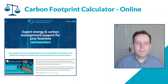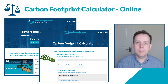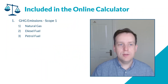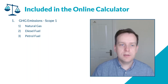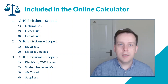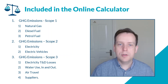Visit our website at bryceenergyservices.com and you can be directed to our carbon footprint calculator. What our calculator will include is greenhouse gas scope one emissions — natural gas, diesel fuel, petrol fuel — scope two emissions: electricity and electric vehicles, and scope three: electricity losses, water use in and out of your business, air travel, and your suppliers.